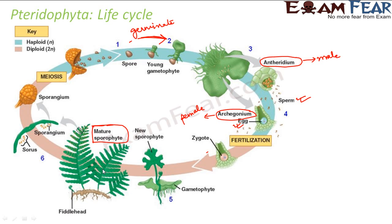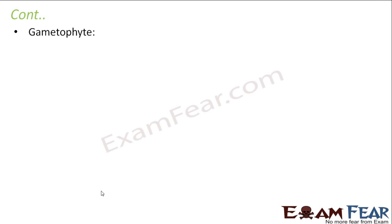In the case of mosses we saw the additional step of protonema. In the case of ferns, the sporophyte is the dominant phase because it is the long-lived plant we actually see around us. The sporophyte is multicellular, well differentiated between roots, stem, and leaves, and long-lived — making it the dominant phase.